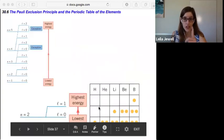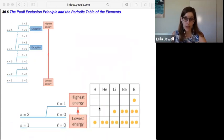So let's take a look here. Hydrogen has just one electron, and so it's going to go in the lowest energy in its ground state. Helium now has two. And there's two possible states in that n equals one, l equals zero.